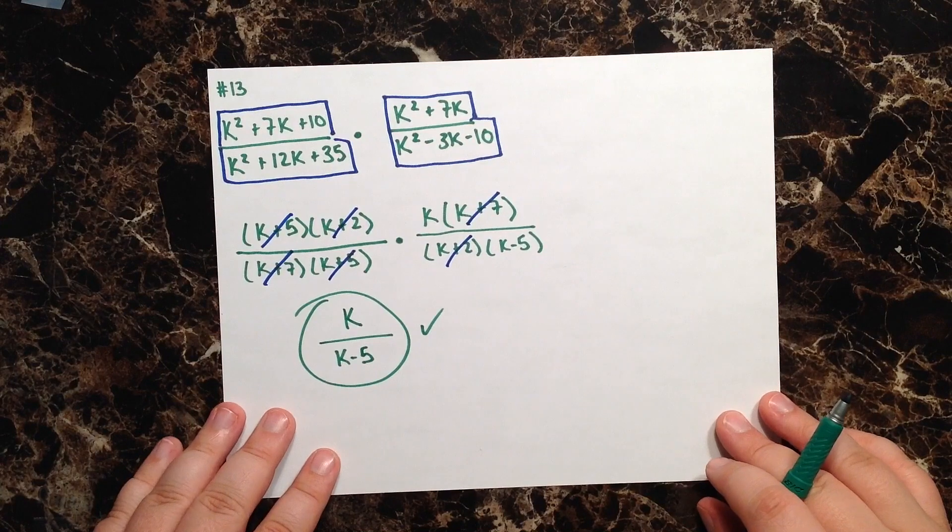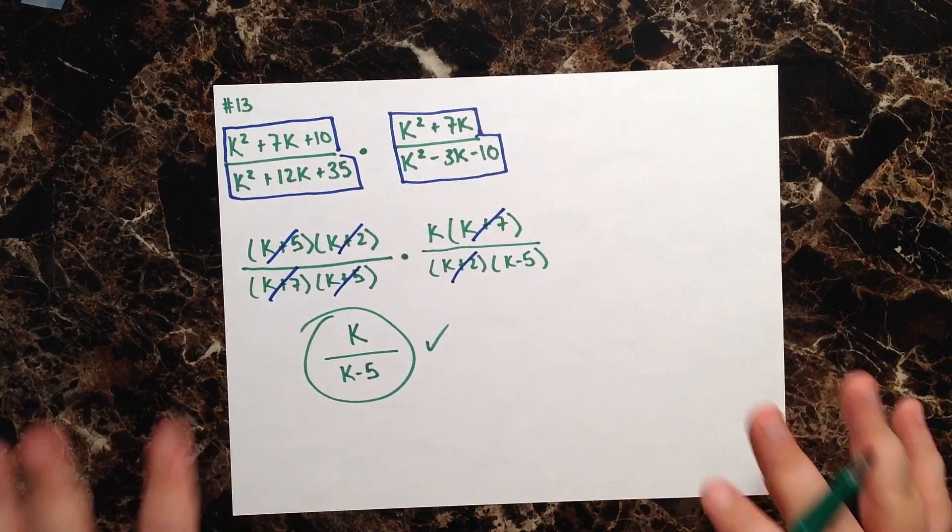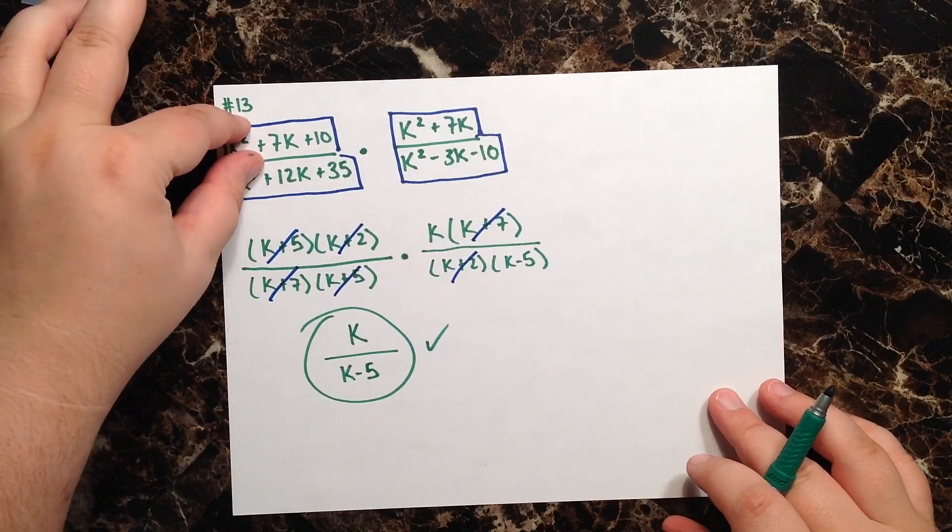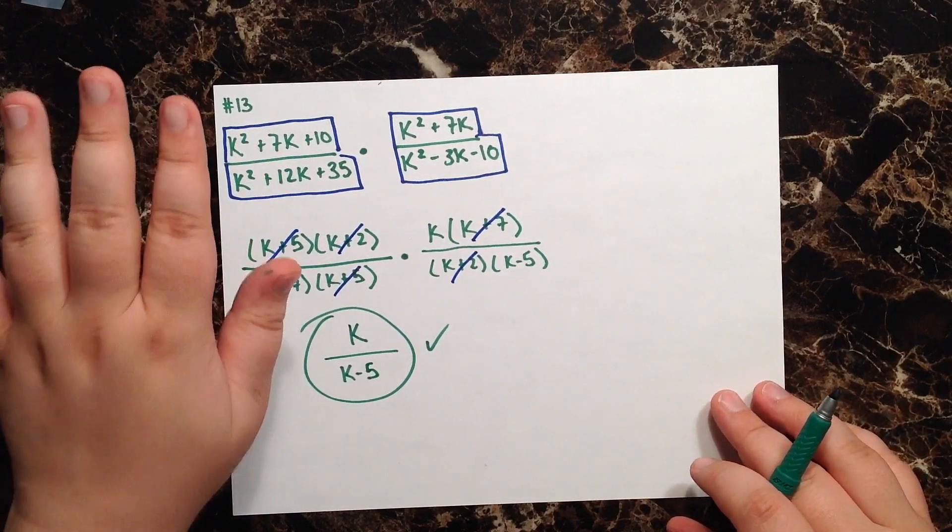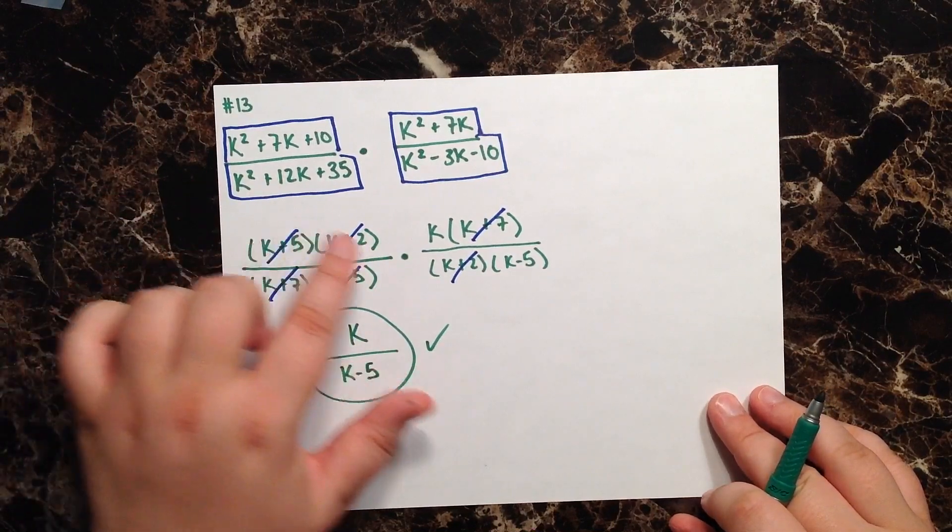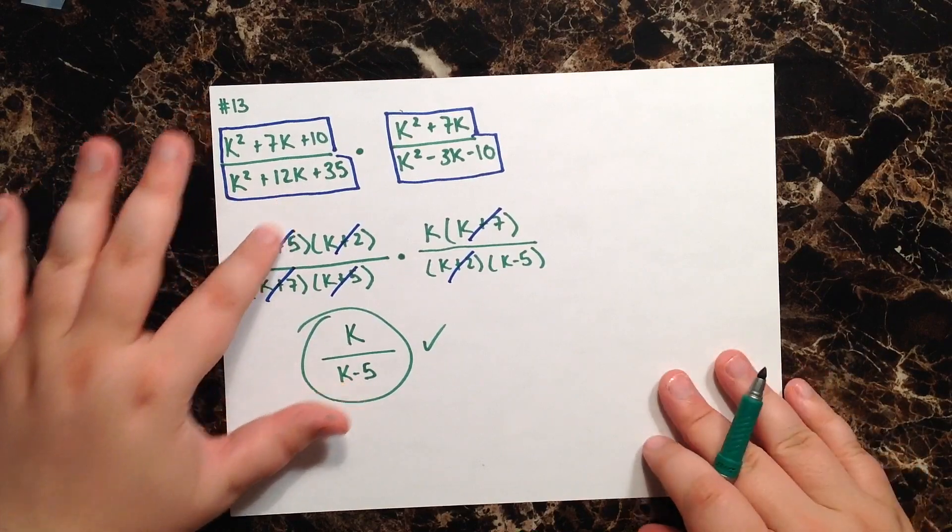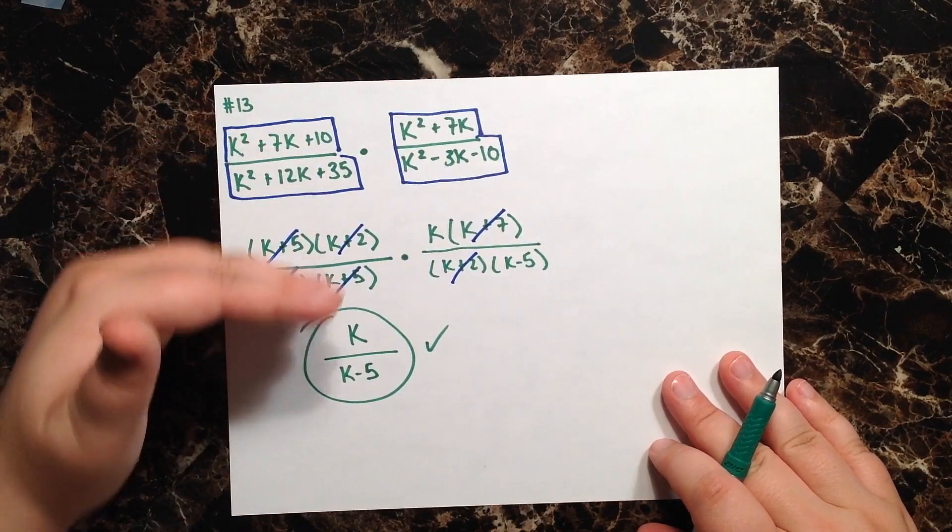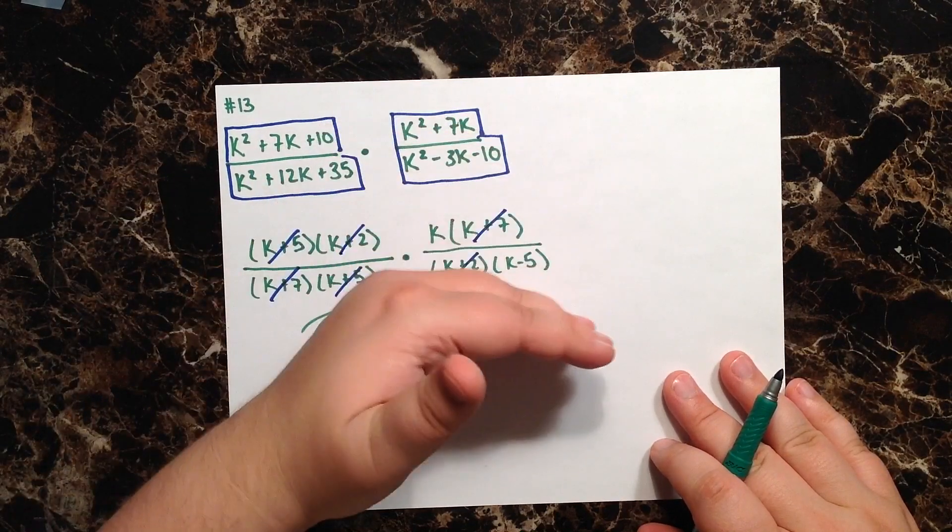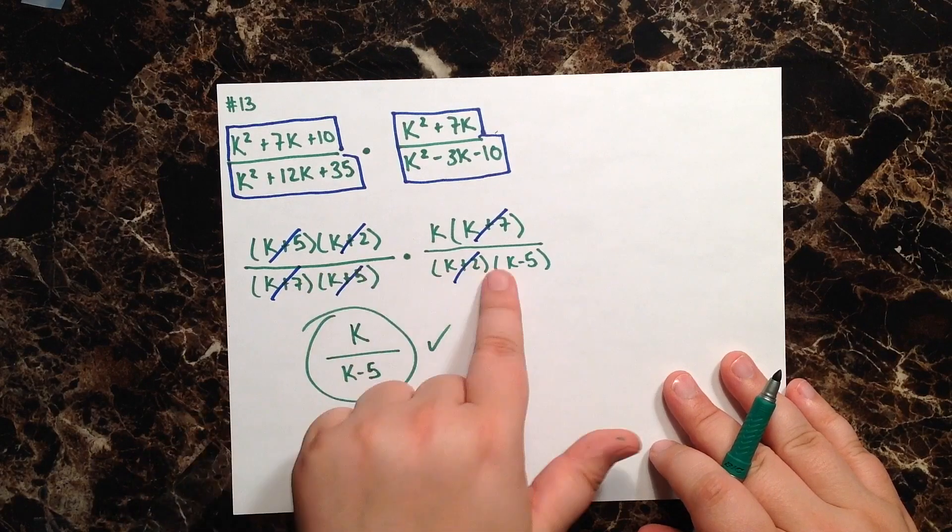Hopefully you can see that wasn't really as trying as it might have appeared at first, so long as you take it step by step. Treat each of your numerators and denominators like a separate problem, focus one at a time and just factor each one. After you've factored, then comes the fun part and just cancel out wherever you can. Remember, you can only cancel up and down or diagonally. Do not cancel straight across.